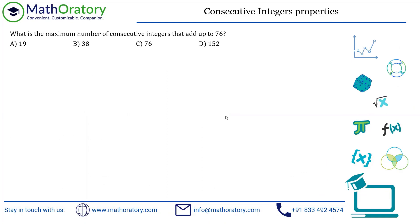A very simple problem, but a very interesting one. You have to find the maximum number of consecutive integers that could add up to 76. As soon as you read 'maximum,' you should understand that we are trying to figure out as many integers as we can.